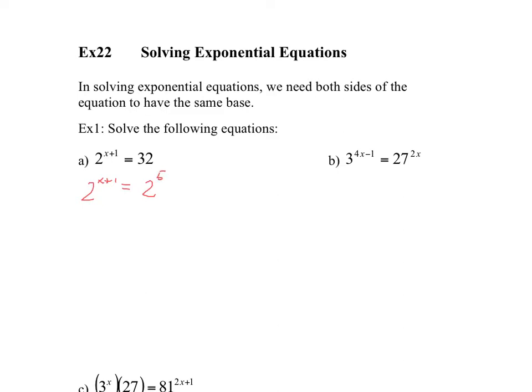And then, since they have the same base, we have base of 2, base of 2, we could put an equal sign between our exponents, because if they both base of 2, the exponents have to be equal for this to be true. So we have x plus 1 equals 5. And then we simply solve, bring the 1 over, you have x equals 4.